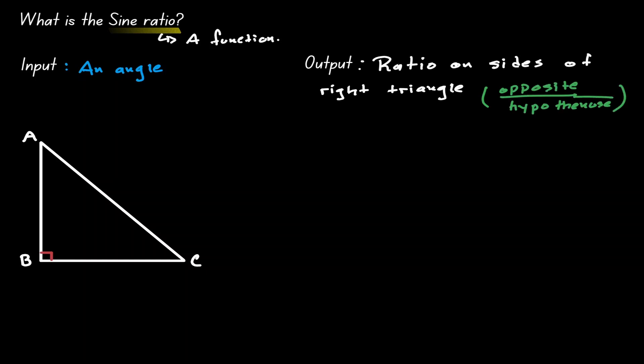So let's visualize this idea. If we have an angle and we plug it into the function of sine, which we're just going to write as sin, the outcome that we get out of it is a ratio of opposite over hypotenuse.